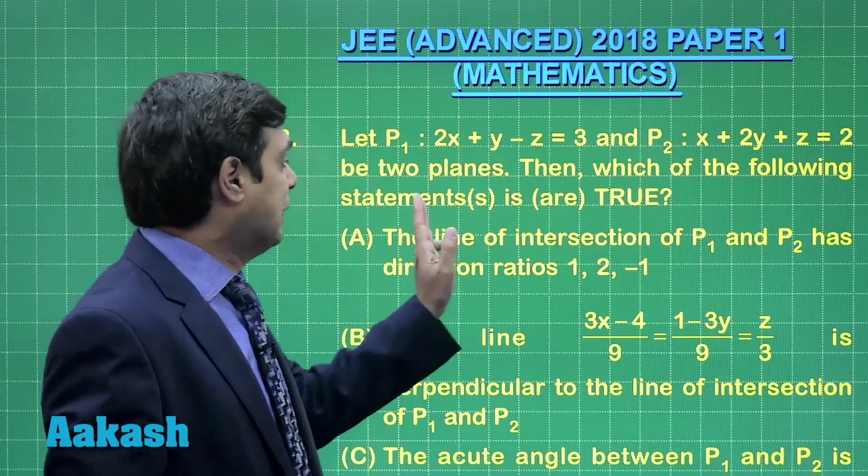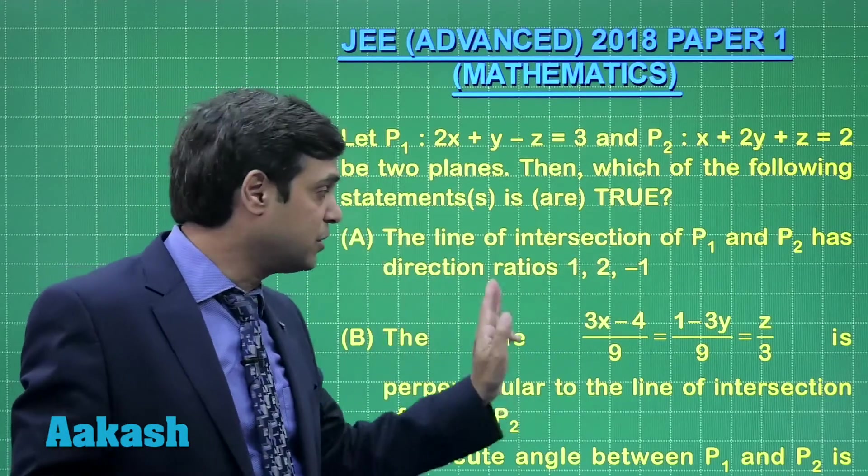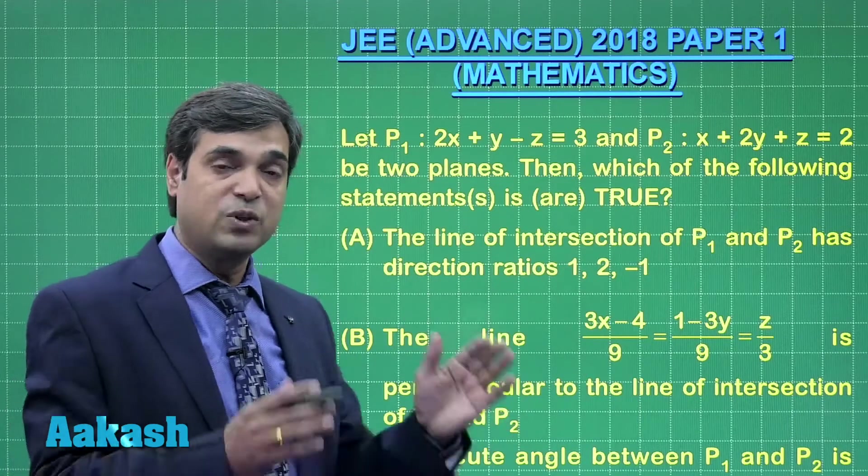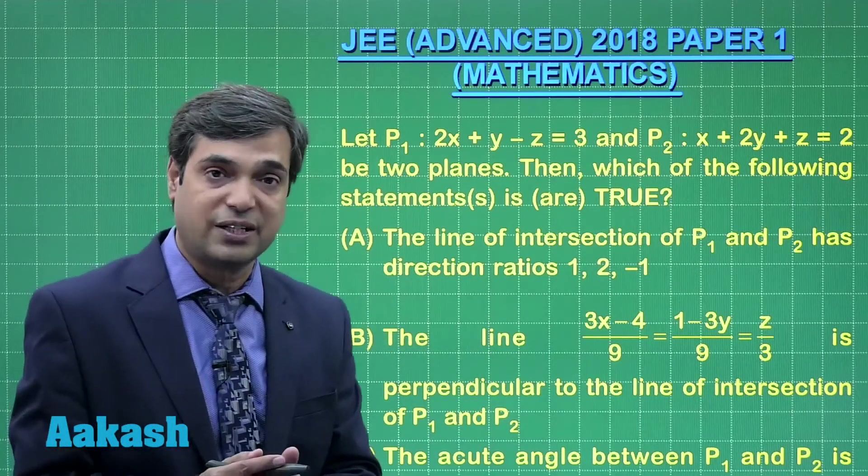First one is talking about the line of intersection of P1 and P2 has direction ratios 1, 2, minus 1. We have to talk about the direction ratios of line of intersection of 2 planes.